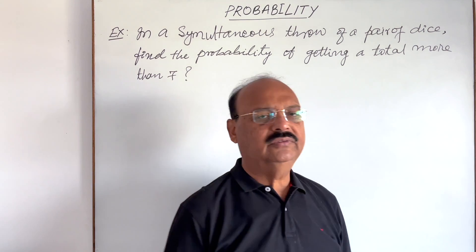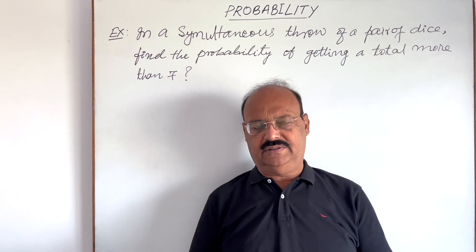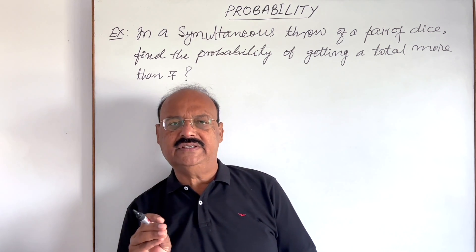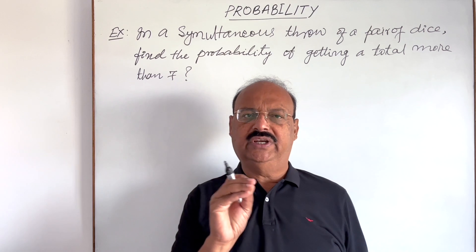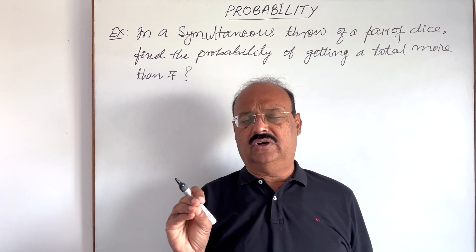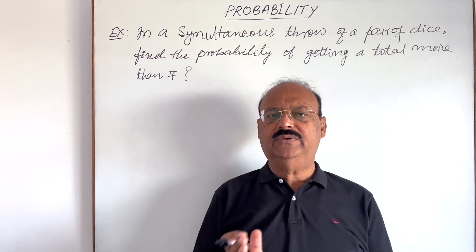As we know, a dice has six faces, six surfaces, and on every surface, every face, some numbers one, two, three, four, five up to six are mentioned or dots are given. One dot, two dots, three dots, like that from one to six.